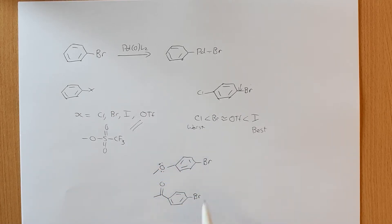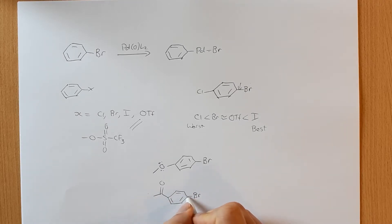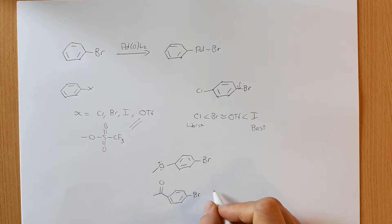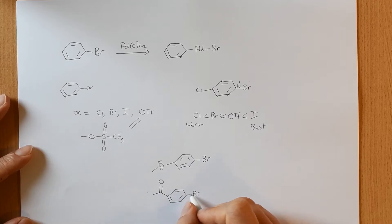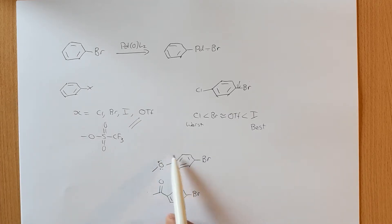On the other hand, this carbonyl is reasonably strongly electron-withdrawing. If this is electron-withdrawing, it's pulling electrons away from this carbon, making this bond weaker. So electron-withdrawing groups are going to increase the rate of oxidative insertion, and electron-donating groups are going to reduce the rate of oxidative insertion.